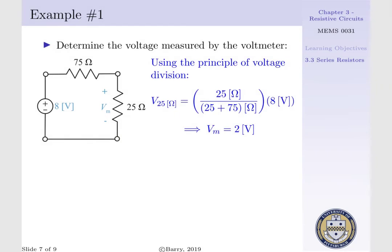Using the principle of voltage division we can calculate the voltage drop across our 25 ohm resistor. It is equal to the resistance of our resistor of interest, 25 ohms, over the sum of the resistances in series, 25 plus 75 ohms, times our source voltage. Thus V sub M, the voltage drop across our 25 ohm resistor measured by our meter, is equal to 2 volts.